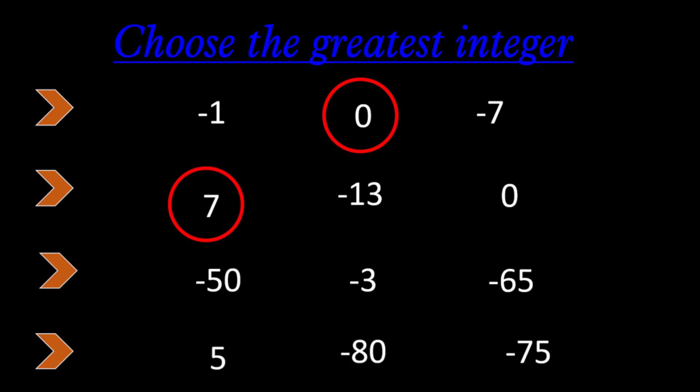Next set: negative 50, negative 3, and negative 65. The greatest one is negative 3, because negative 50 and negative 65 are lying to the left of negative 3 on the number line. Last set: 5, negative 80, negative 75. The greatest one is 5, because any positive integer is greater than any negative integer. Negative 80 and negative 75 are both negative integers.